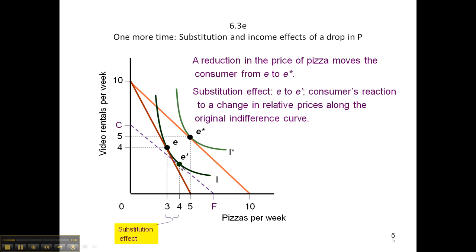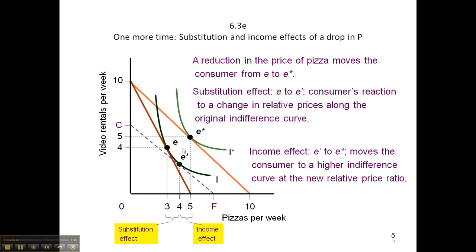And here we are at E-aster. So now what we have is the substitution effect. We've removed the income change, so we have a constant level of income, and we just have a change in relative prices. And the income effect would then be moving up back to E-aster.